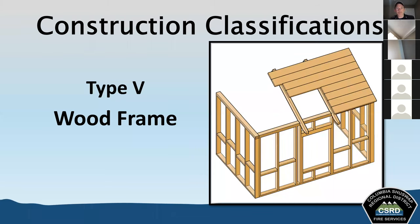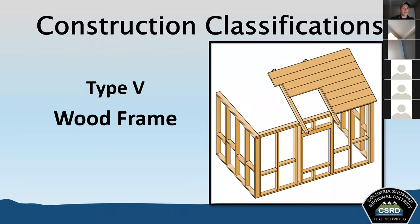Two important construction techniques within Type 5: balloon frame construction, popular from the 1800s to mid-1900s, uses wood studs continuous from the basement to the roof — if fire gets in the walls, there is nothing stopping it from traveling all the way up into the roof. Platform frame construction came around to prevent this — the studs are no longer continuous; the floors are built as platforms which slow fire spread, stopping it at each platform rather than allowing it to travel straight to the roof.